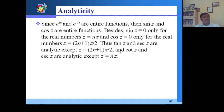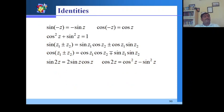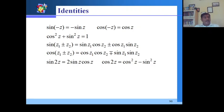cot z and csc z are analytic except at z = nπ. The derivatives follow the same rules as in real analysis: d/dz(sin z) = cos z, d/dz(cos z) = -sin z, d/dz(tan z) = sec²z, d/dz(cot z) = -csc²z, d/dz(sec z) = sec z·tan z, d/dz(csc z) = -csc z·cot z. Identities also hold: cos²z + sin²z = 1, sin 2z = 2 sin z cos z, cos 2z = cos²z - sin²z.